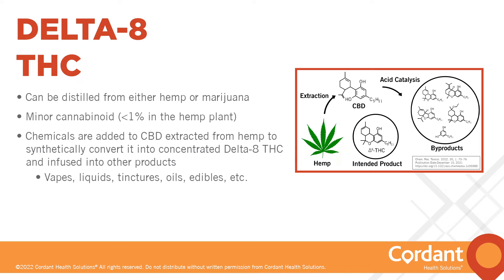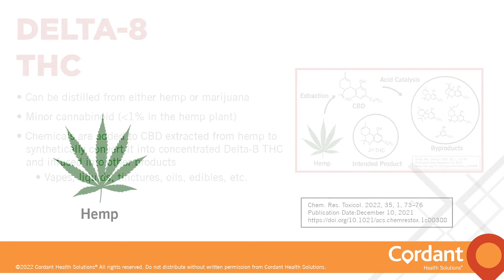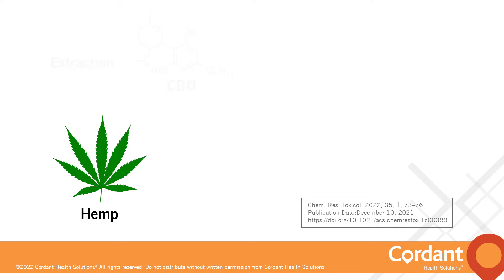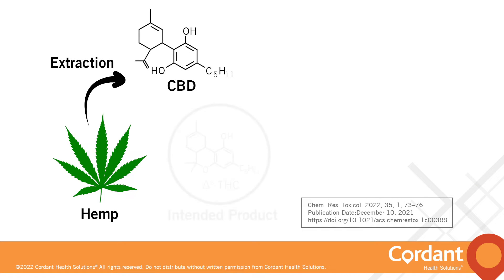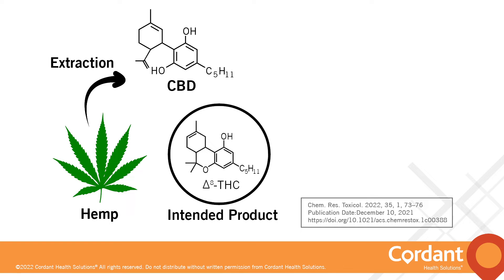Delta-8 THC is indeed naturally occurring in the cannabis plant, but is present in such low levels as to not cause a primary intoxicating effect. In order to get that potency it must be created by altering either the hemp plant and thus the CBD within, or by altering the CBD within marijuana. Since CBD is in higher abundance in hemp, it is most commonly isolated from hemp, extracted through a complex distillation process, and then infused into other products. First, chemicals are added to the hemp to extract the CBD, and then additional chemicals are added to the CBD to create delta-8.